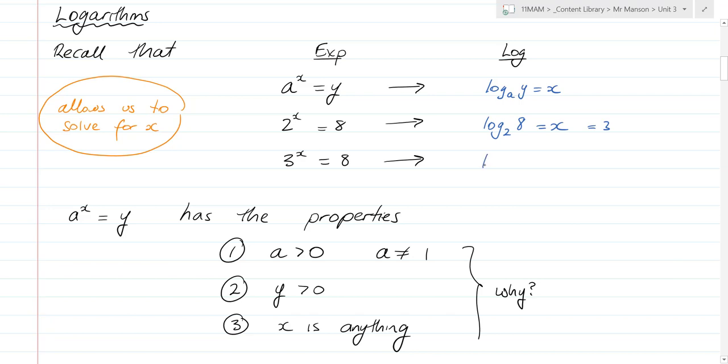That means of course that 2^x equals 8 gives us the form log base 2 of 8 is equal to x. And of course we can solve that. That's equal to 3. And 3^x equals 8 gives us the form log base 3 of 8 equals x. And that's not as easy to solve. It's some number between 1 and 2.